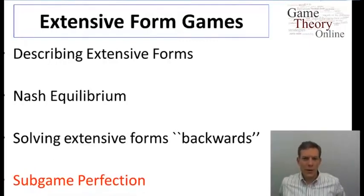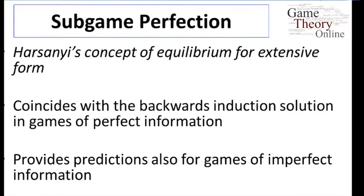In terms of our extensive forms, we've talked about Nash equilibrium and solving games backwards. Now let's talk about sub-game perfect equilibrium. Sub-game perfection was a concept defined by John Harsanyi. It gives us a way of solving extensive form games, and in particular it's going to coincide with the backward induction solution in games of perfect information, but it also works in a different way than backward induction — backward induction is a way of finding sub-game perfect equilibria, but more generally sub-game perfection is a different way of defining that.